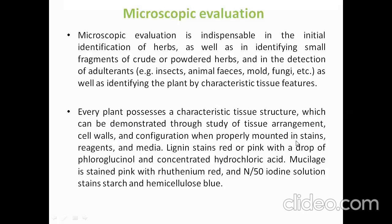Every plant possesses a characteristic tissue structure which can be demonstrated through a study of tissue arrangement, cell walls, and configuration when properly mounted in stains, reagents, and media. When cutting a transverse section, we add certain reagents to reveal the color of specific cells or tissues. Lignin stains red or pink with fluoroglucinol and concentrated hydrochloric acid (1:1 ratio); mucilage is stained pink with ruthenium red; and iodine solution stains starch grains and hemicellulose blue.